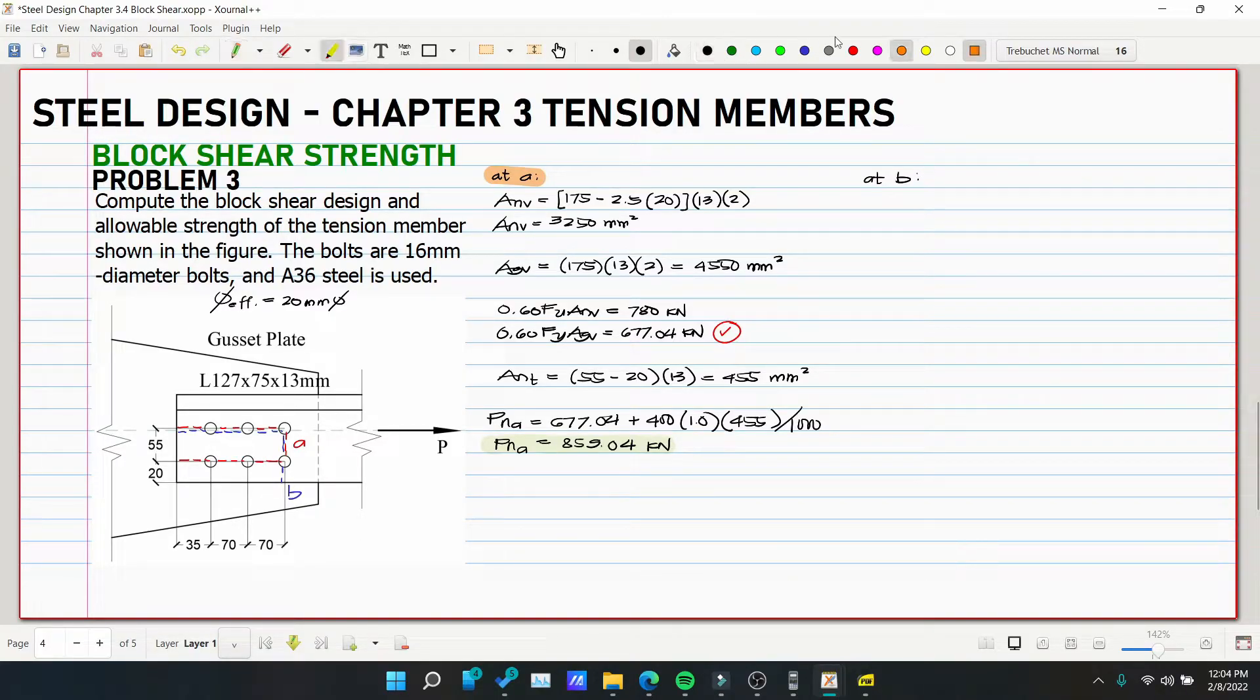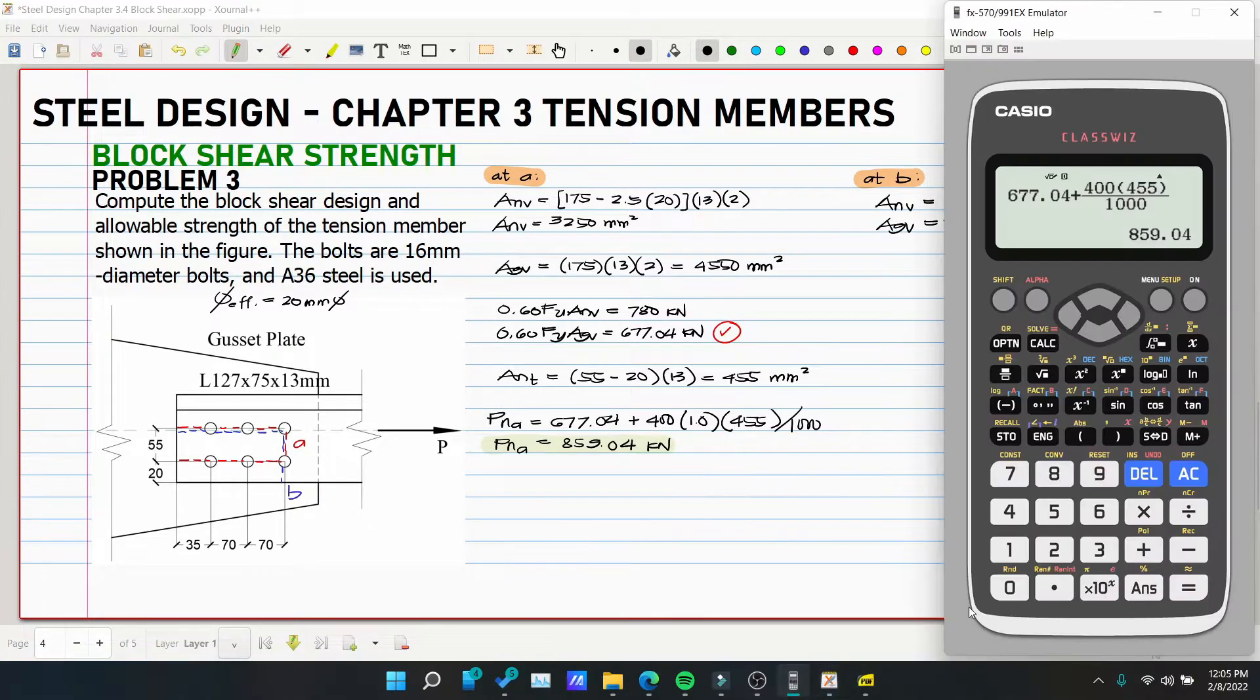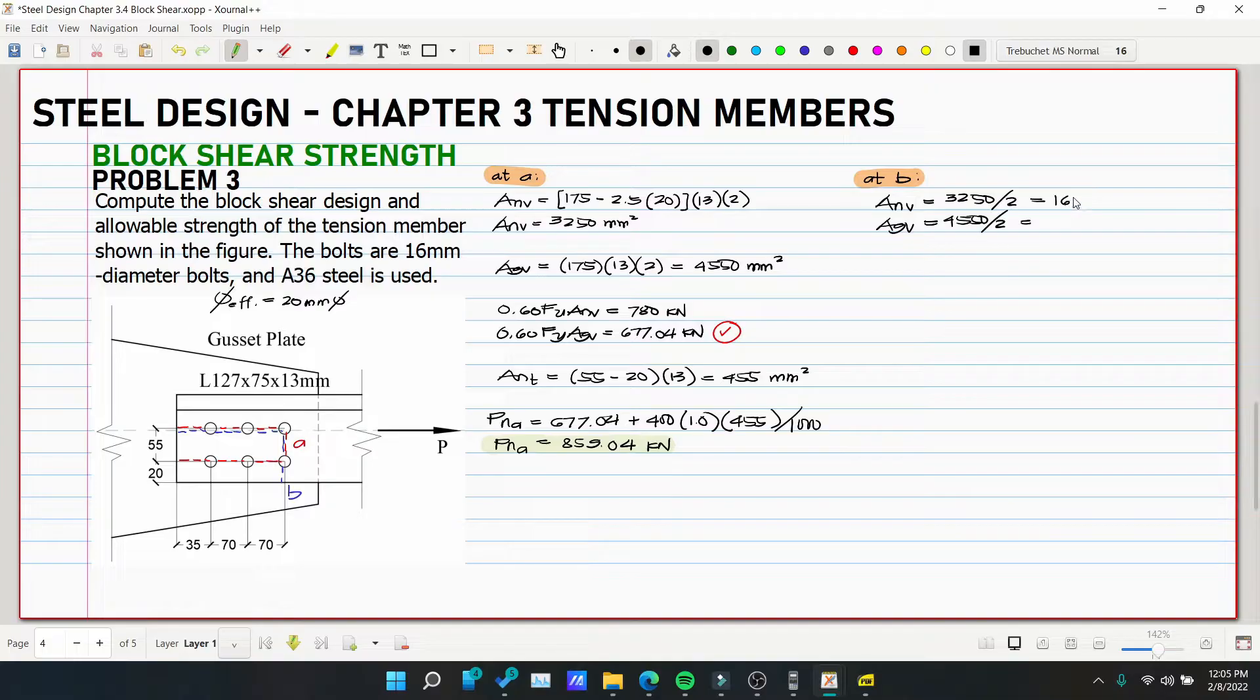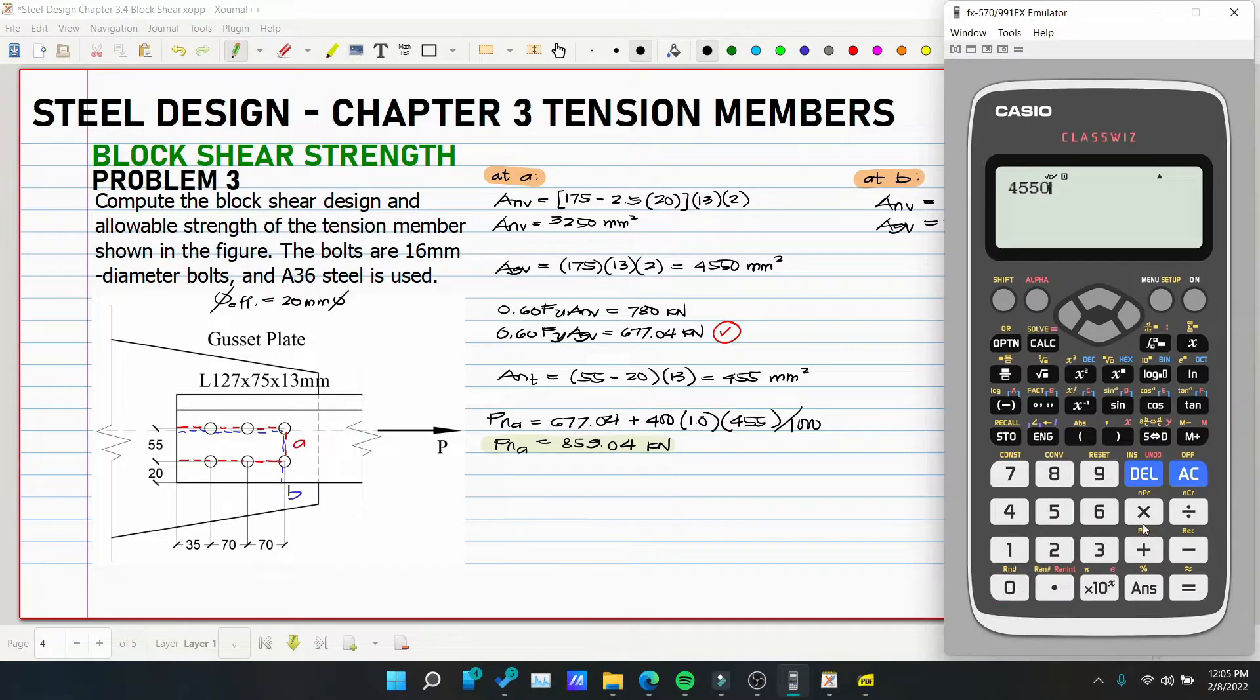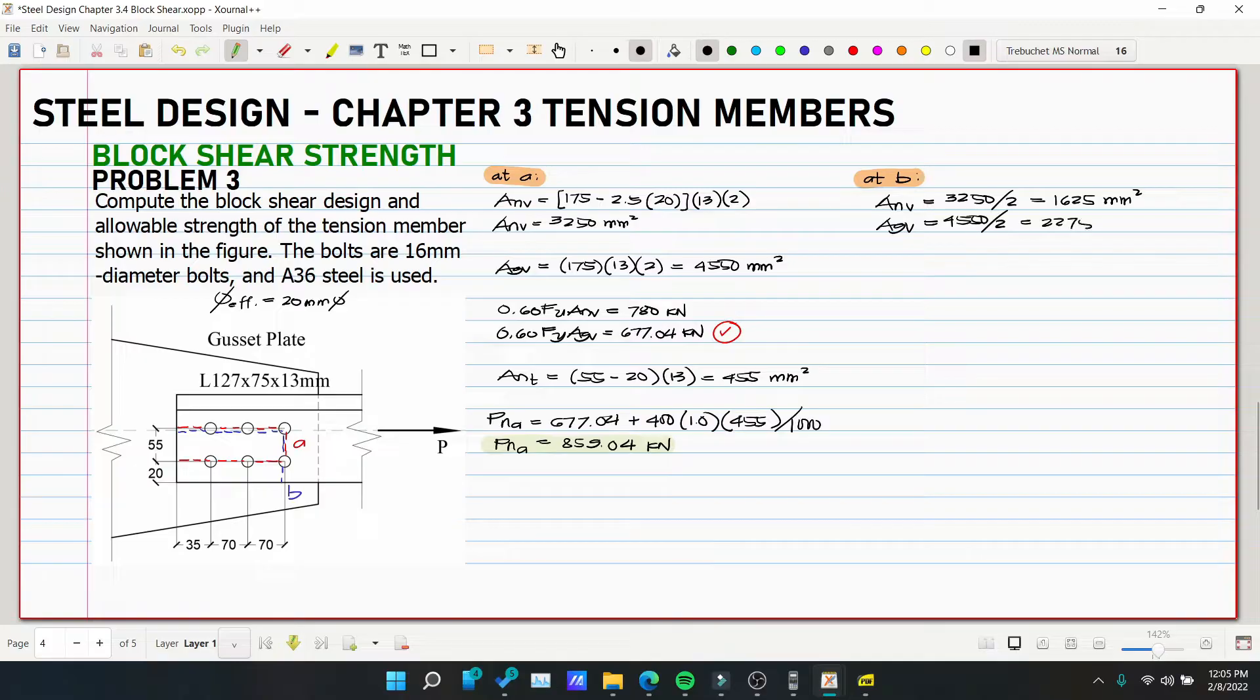At B. So this is our B. So we'll just halve our AN. ANV, so 3250 over 2. And halve also AGV which is 4550 over 2. So 1625 millimeter squared. And same with our AGV, 2275.